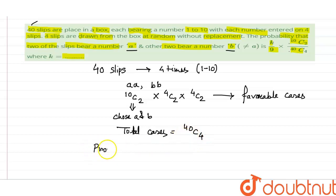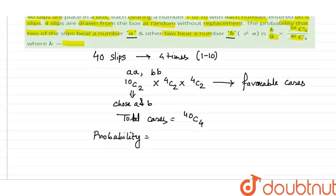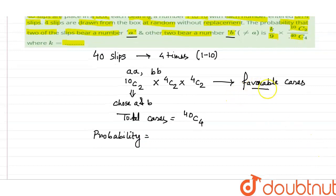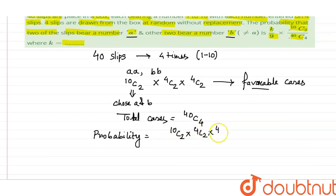What is the probability then? What is the probability formula? You know, favorable cases by the total number of cases. Favorable cases here, it is given 10C2 × 4C2 × 4C2, whole divided by 40C4.